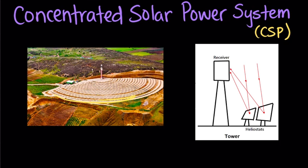One specific type uses mirrors to reflect that solar energy onto a single tower. That energy can then be used to boil water, create steam, and ultimately generate electricity.